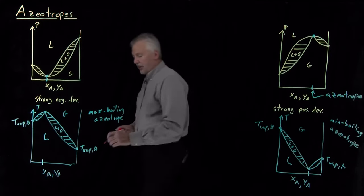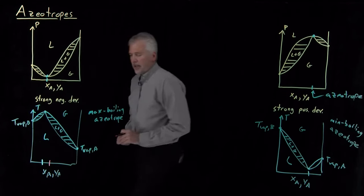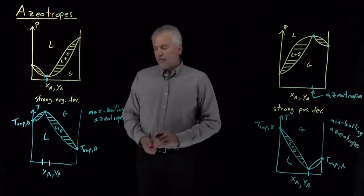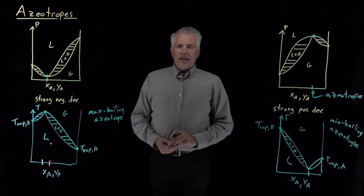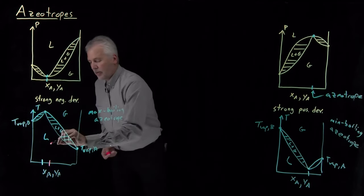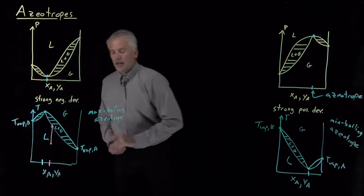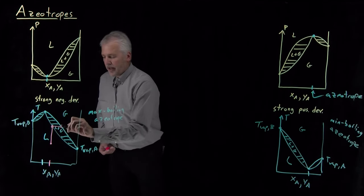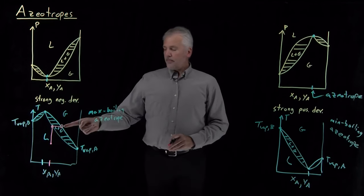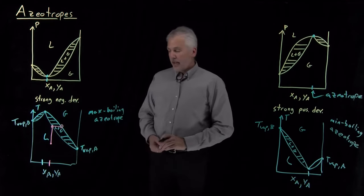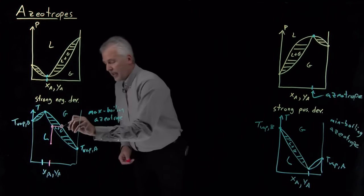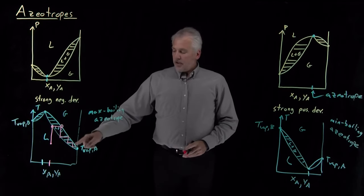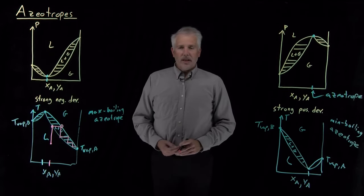If I prepare a solution not at the azeotropic concentration but at some particular concentration — say a 50-50 mixture of A and B — prepared in the liquid phase, and I heat that system until it boils, I raise the temperature until I get to the bubble point. When the first bubble forms, the concentration of that bubble is enriched in the more volatile component A. If I condense, re-boil, condense, re-boil, I can eventually purify component A by fractional distillation.